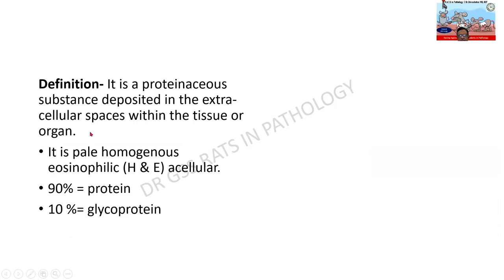Definitions are definitions. Amyloid is a proteinaceous substance deposited in the extracellular spaces within the tissue or organ. It is pale, homogeneous, amorphous, eosinophilic, and acellular. All these adjectives are essential in your definition — we do not want your own words.